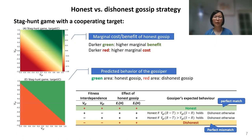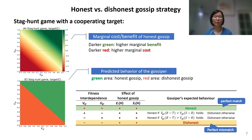Through this model, we were able to predict the rational preference for honest or dishonest gossip strategy in different social interactions. Our model suggests a very simple rule: when there is a perfect match between fitness interdependence and the effect of honest gossip, the gossipers should always be honest. In case of a perfect mismatch between these two, the gossipers should always be dishonest. For instance, in a stag-hunt game with a cooperating target, honest gossip benefits both the receiver and the target. Therefore, people should be honest when they have positive relationships with both the target and the receiver, and dishonest when they have negative relationships with both.